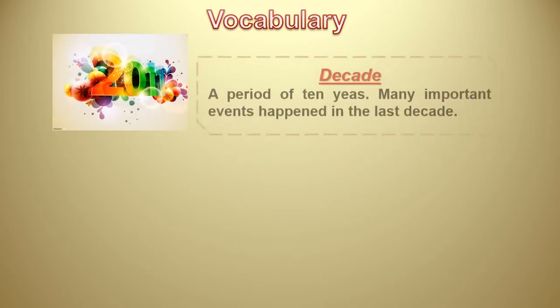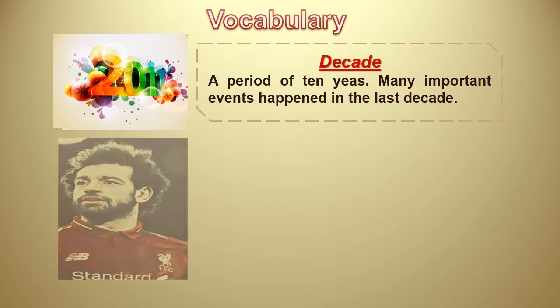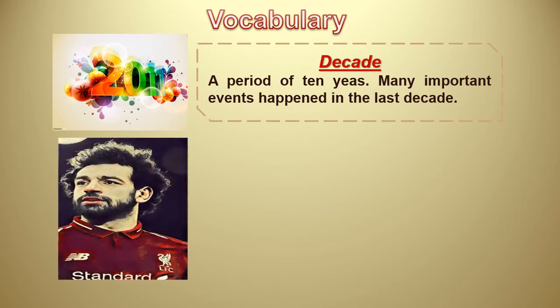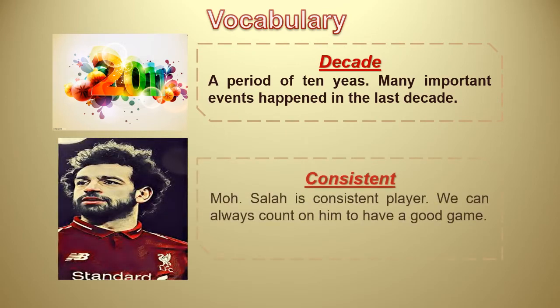The next vocab is the word decade. Decade means a period of ten years. Example: we are in 2021; ten years ago it was 2011. Many important events happened in the last decade — many things happened during these ten years.